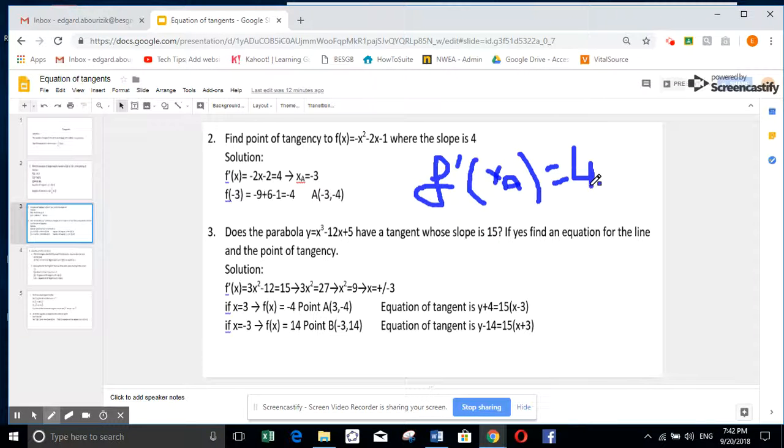So we do the derivative. f prime of x is minus 2x minus 2 equals 4. So if you solve for x, you're going to get x of a is minus 3. To find y of the point we replace here, minus 9 plus 6 minus 1. So you're going to get the point minus 3, minus 4.